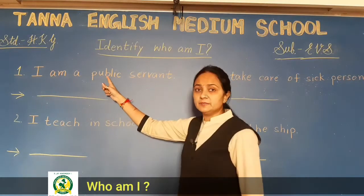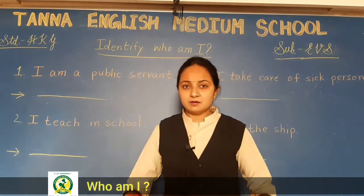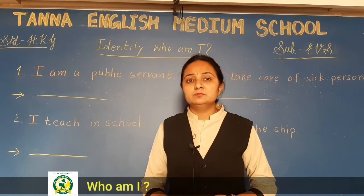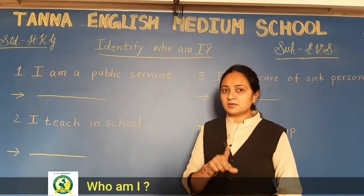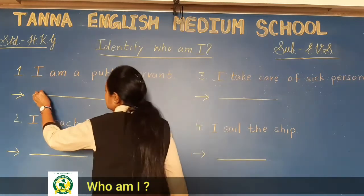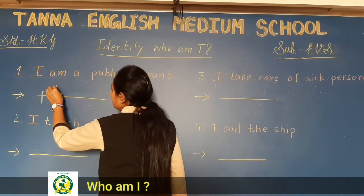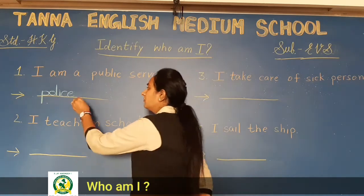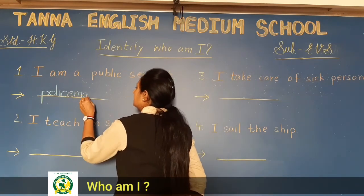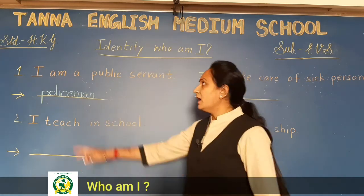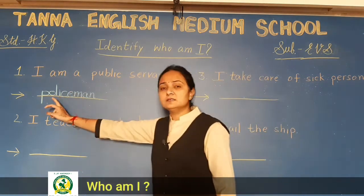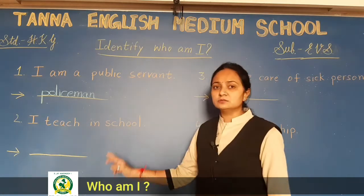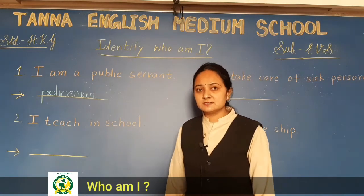First one: 'I am a public servant.' Public servant means we the public — so who is our servant? It's the policeman. Write it in small letters on the four lines. Spelling: p-o-l-i-c-e-m-a-n — policeman. There are pictures given on this page too, okay.